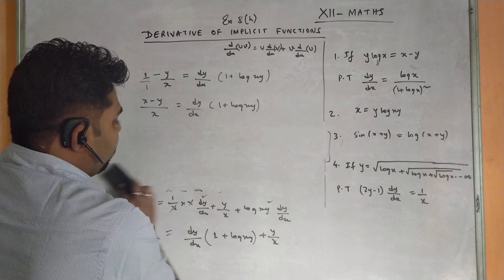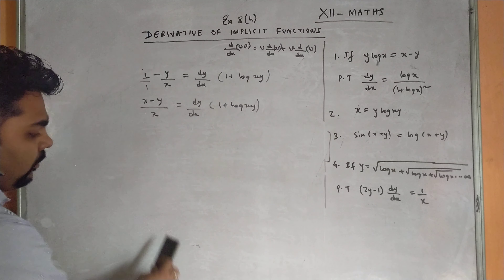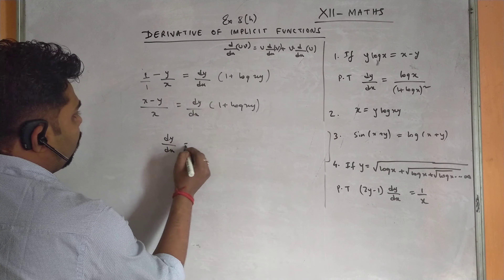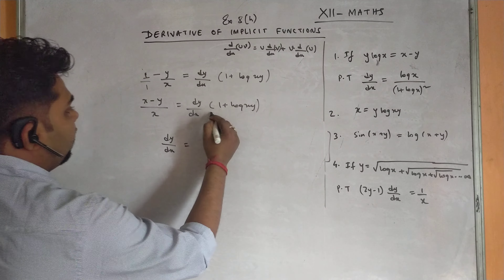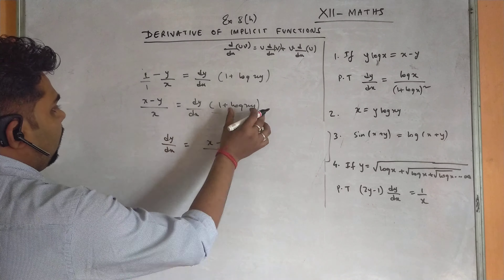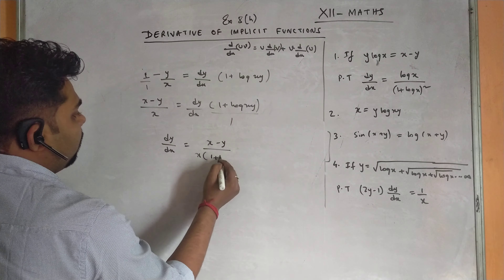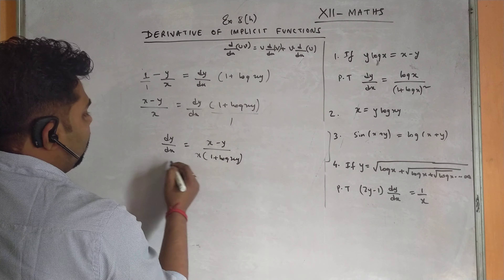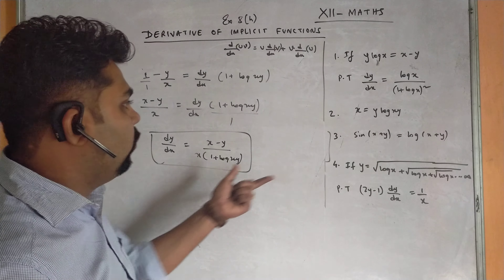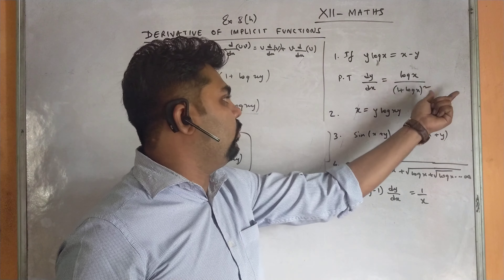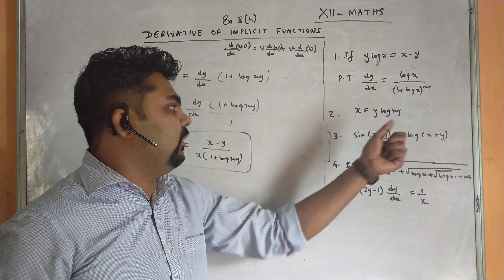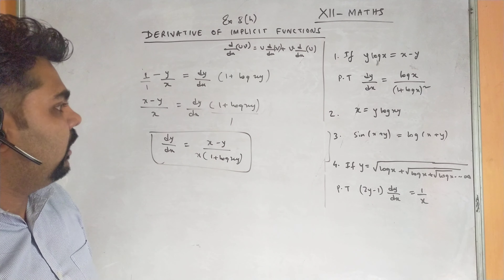Cross-multiplying: dy/dx = (x - y) / [x·(1 + log xy)]. In this question we do not have to prove anything, so we keep the answer as is. This is our final answer.